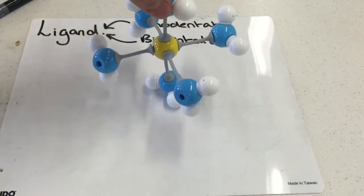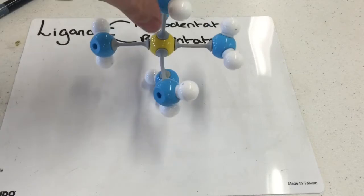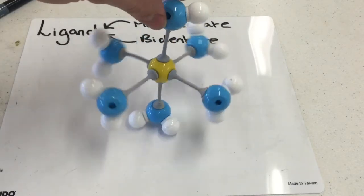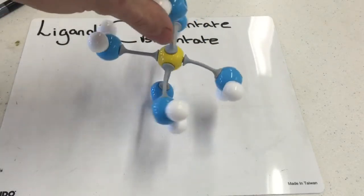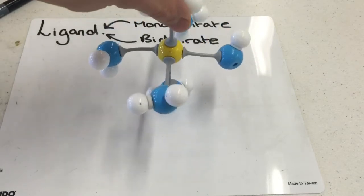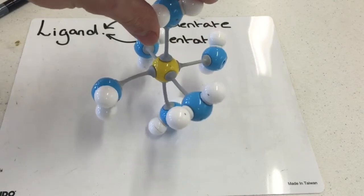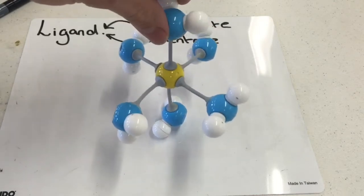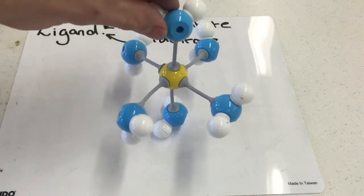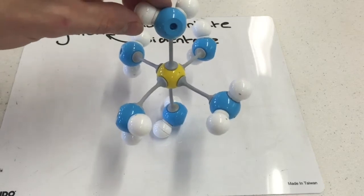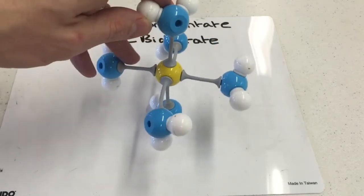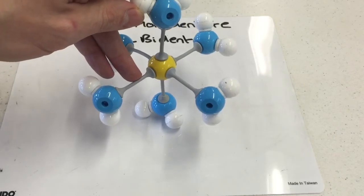Hopefully the 3D shape looks familiar to you, this 3D shape is octahedral. All of these water molecules have formed coordinate bonds and because I have 6 coordinate bonds, the coordination number of this complex ion is 6. So the coordination number is not the number of ligands, it's the number of coordinate bonds.